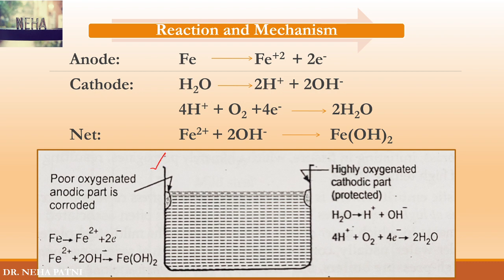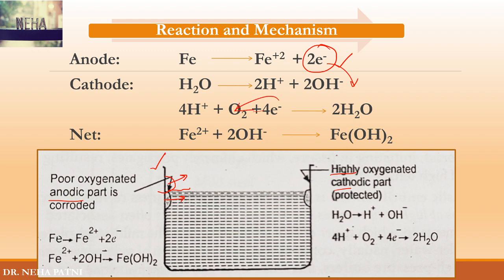Let's say you have a water tank filled with water, made up of iron. The same iron has good access to oxygen above the water and poor access just beneath the water level. Since the part above is highly oxygenated, it becomes cathodic, and since the part below is poorly oxygenated, it becomes anodic. Corrosion occurs at the anode — oxidation reaction occurs, iron loses electrons, the electrons flow through the electrolyte (water), oxygen and H⁺ ions take up those electrons, and overall iron gets hydrolyzed to form iron hydroxide.